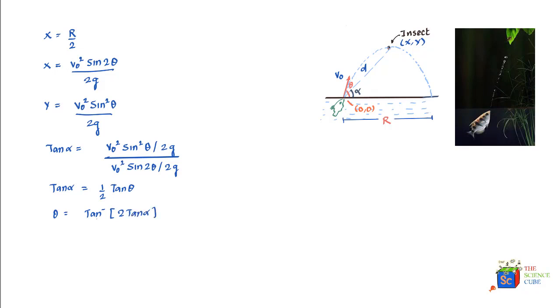And in this question, alpha has been given as equal to 36 degrees. So if you substitute the value of alpha as 36, what you'll find is theta would equal 55.5 degrees. So the fish needs to spit the drop of water at an angle of 55.5 degrees so that the drop of water catches the insect at the top of its parabolic path.